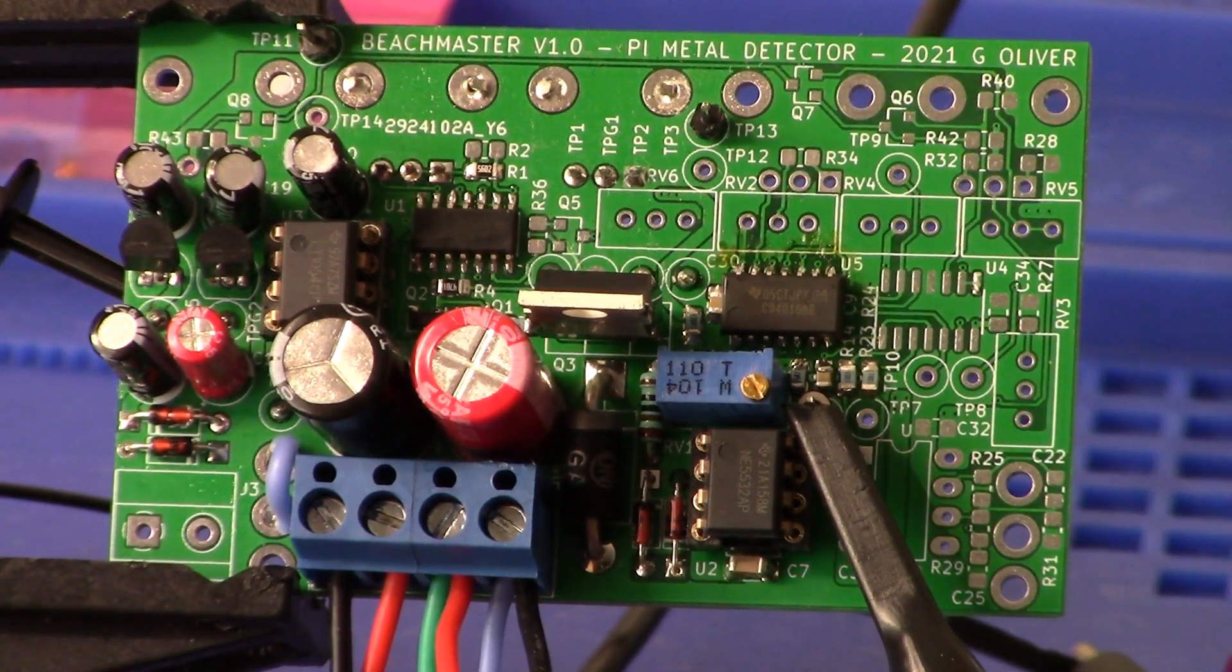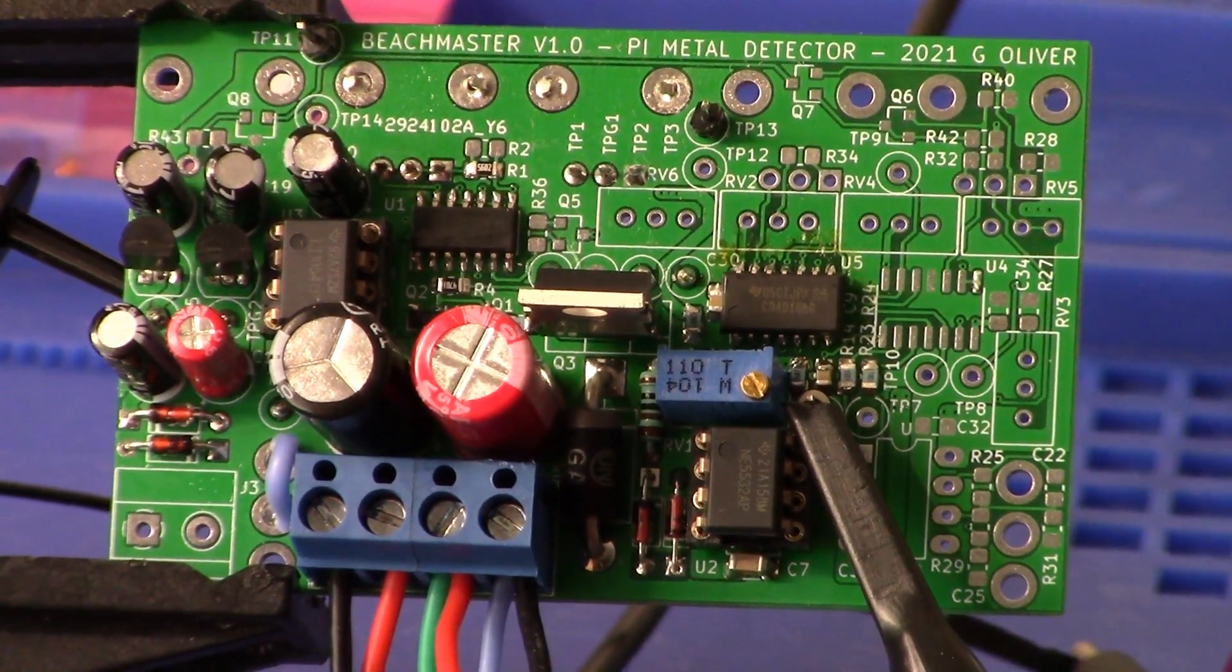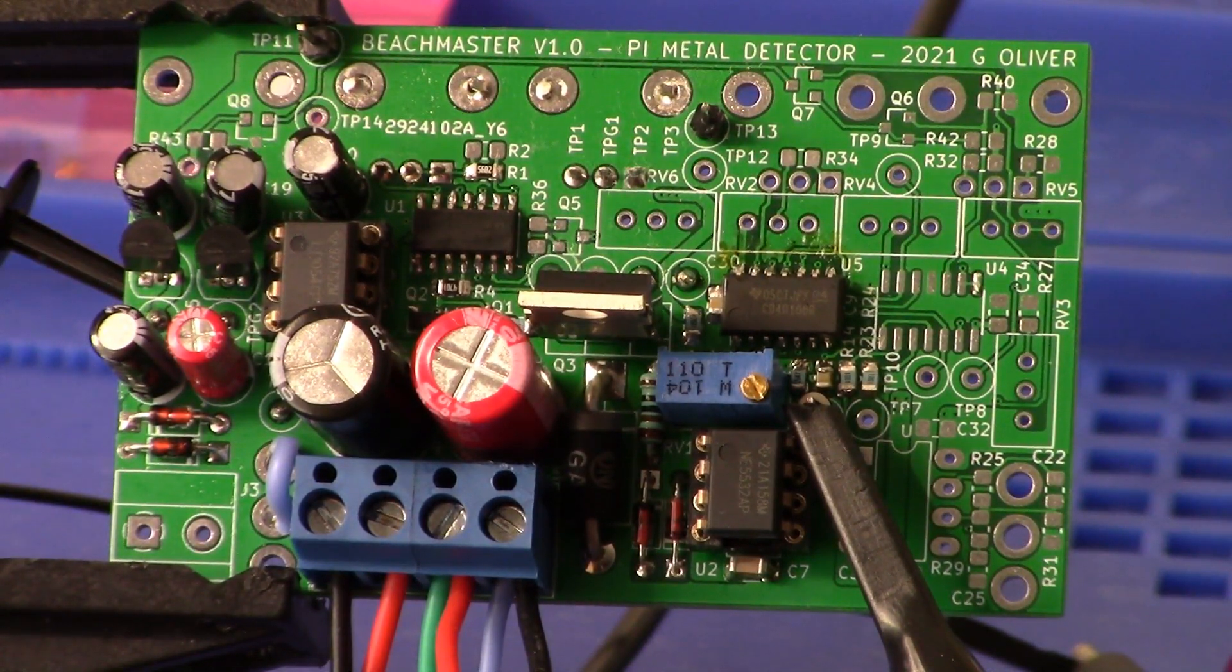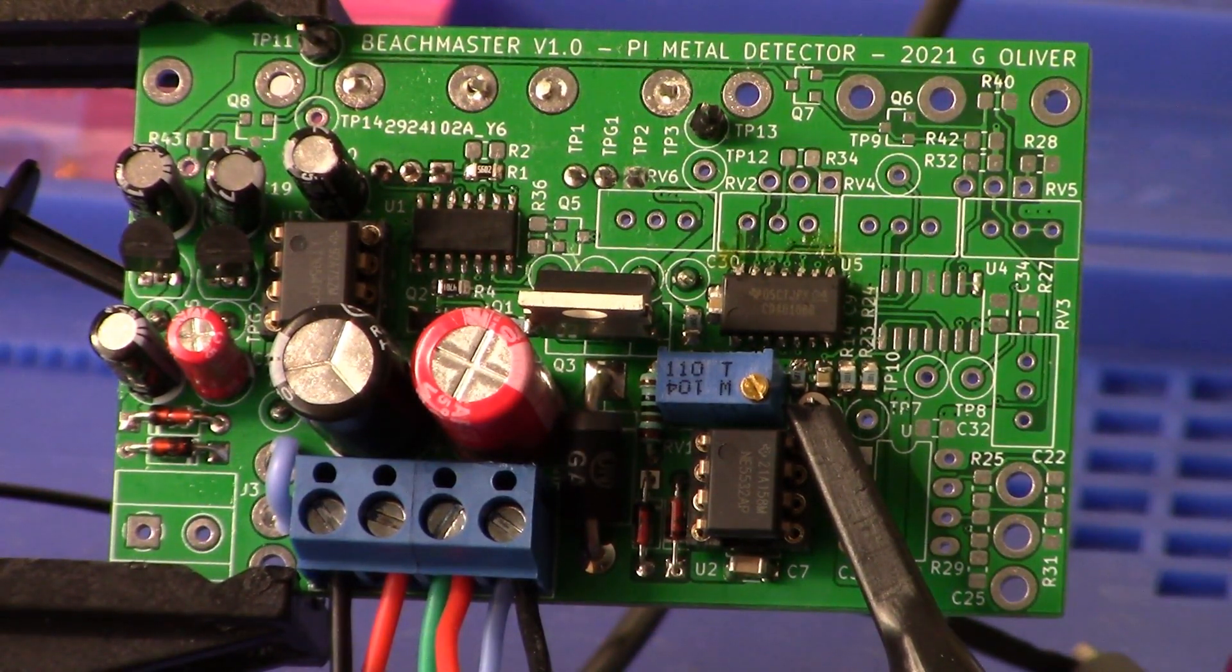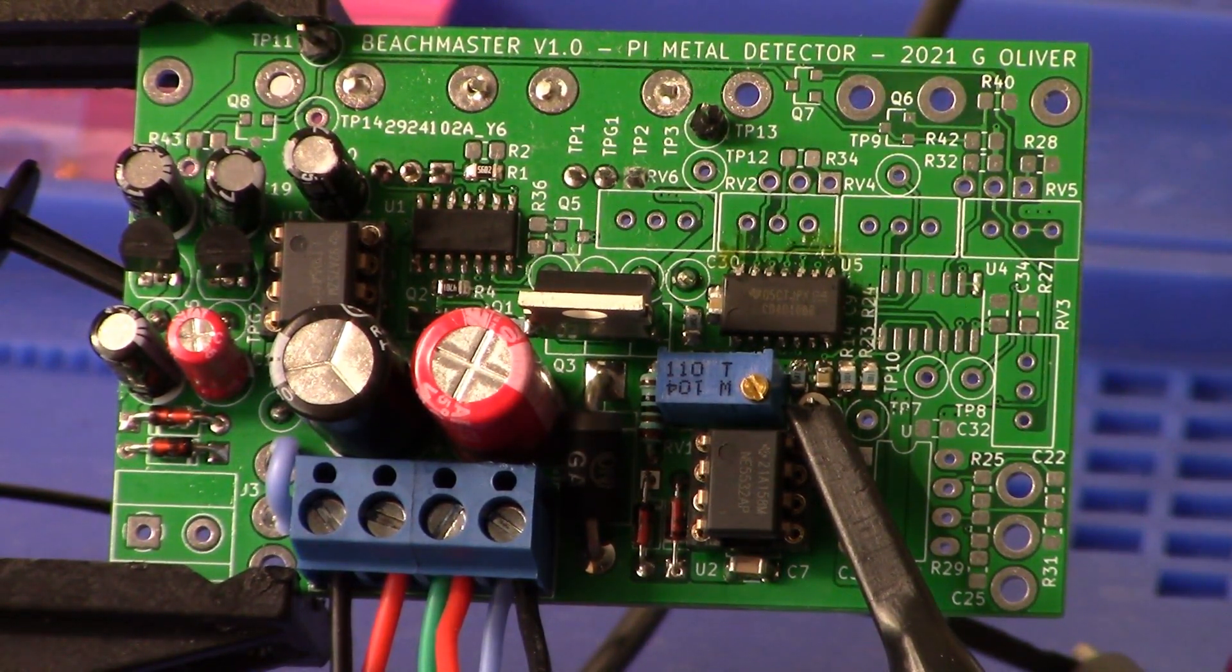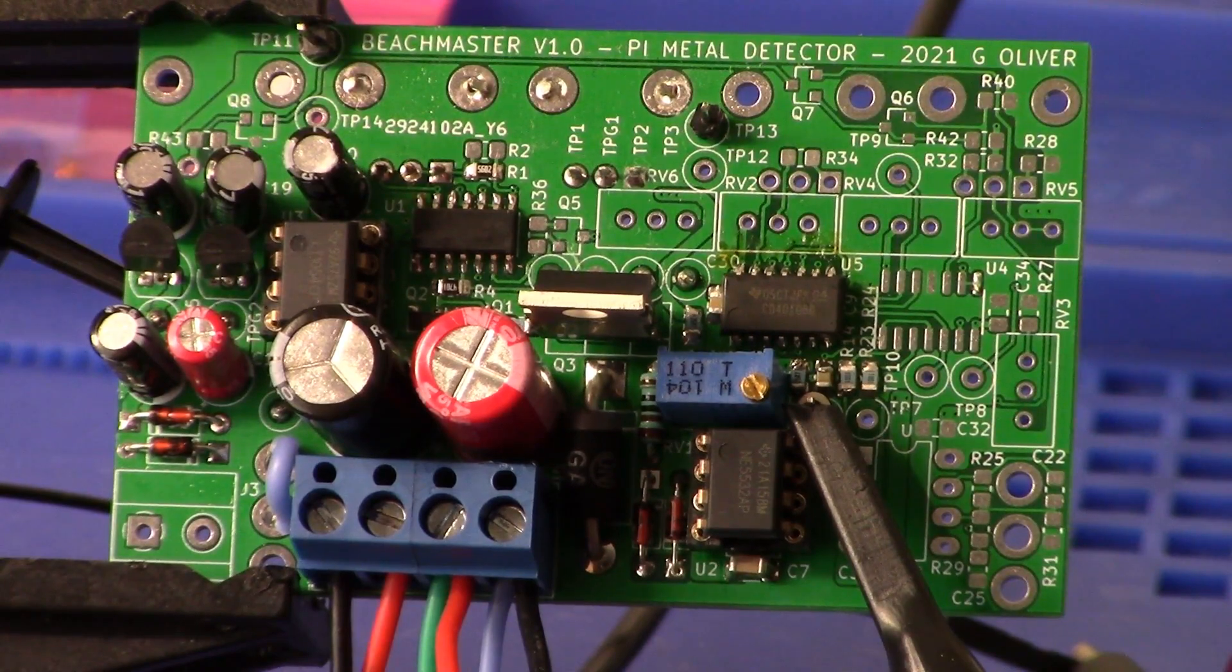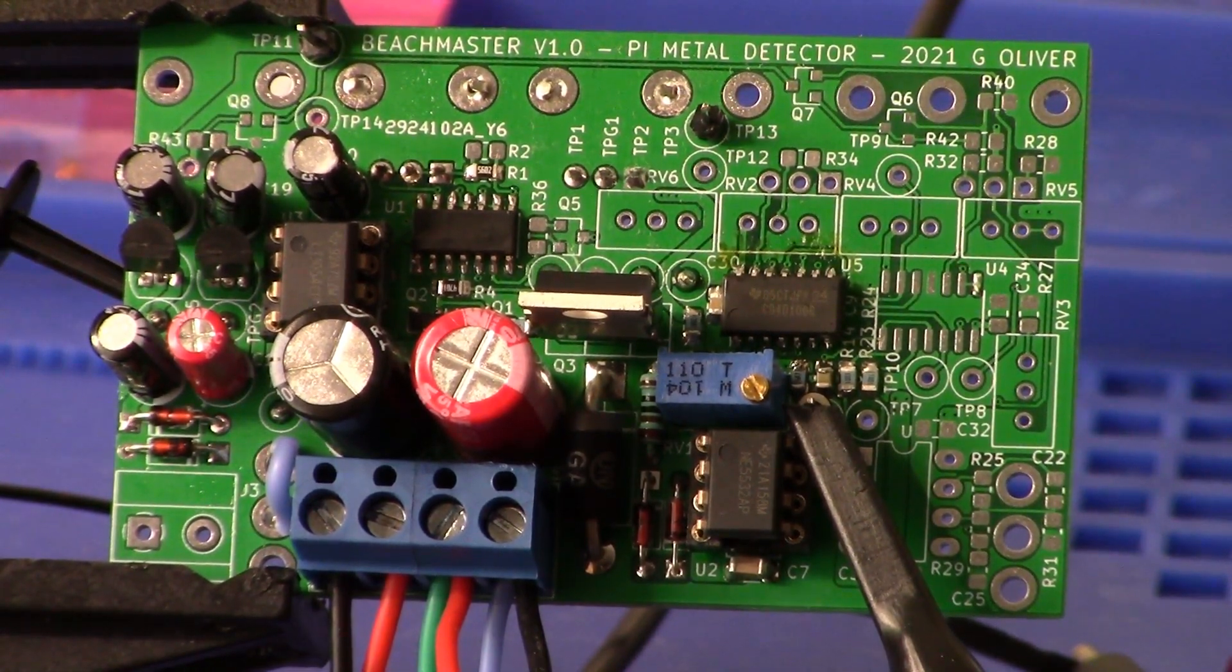All right guys, welcome back once again to the continuing video saga of the Beachmaster pulse induction metal detector. Today we are looking at the preamp, and here is the circuit board—at least the front face of it as we have populated it thus far.